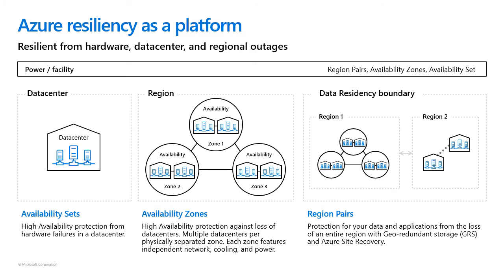An availability zone provides high availability protection against loss of entire data centers. In each Azure region, there are multiple data centers — which is why we call them 58 regions, not 58 data centers. Each zone includes independent network, cooling, and power. If your VM runs on one server rack in zone one, your replica VM runs on another server rack in zone two of the same region. You can also have regional pairs, which provide protection from the loss of an entire region.